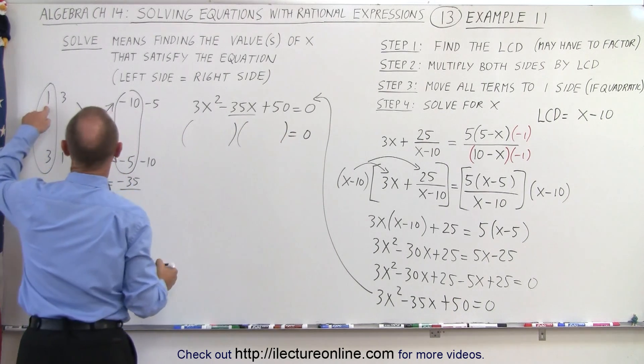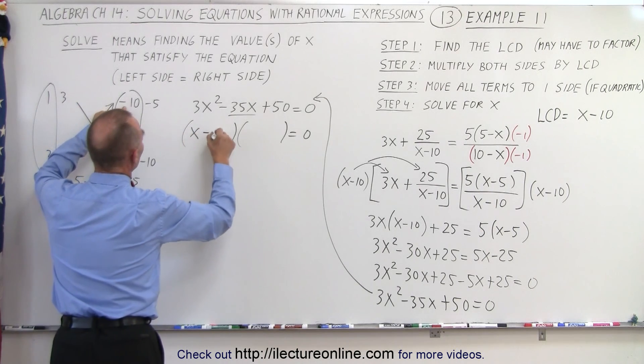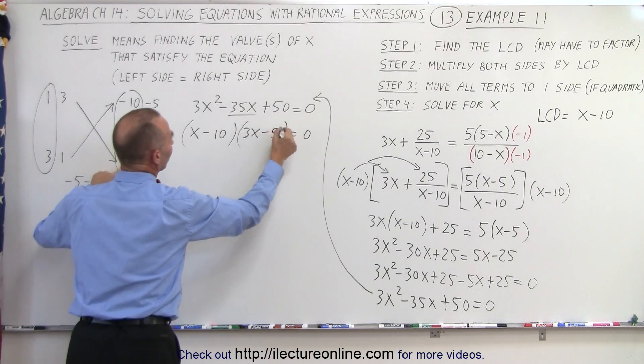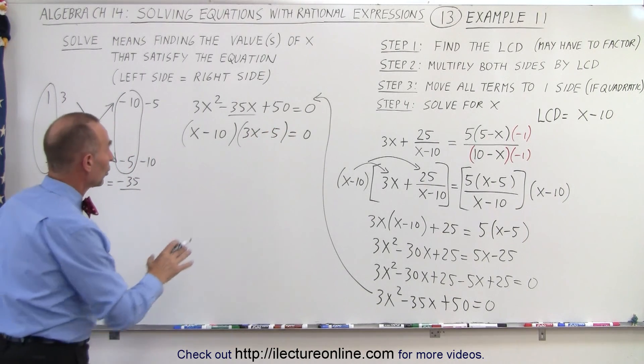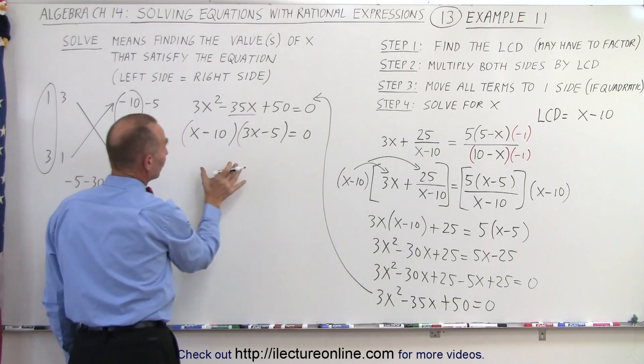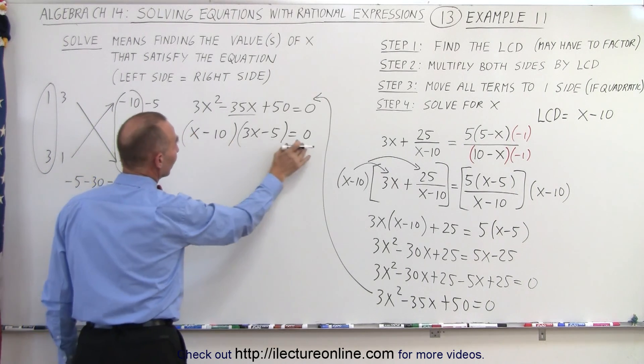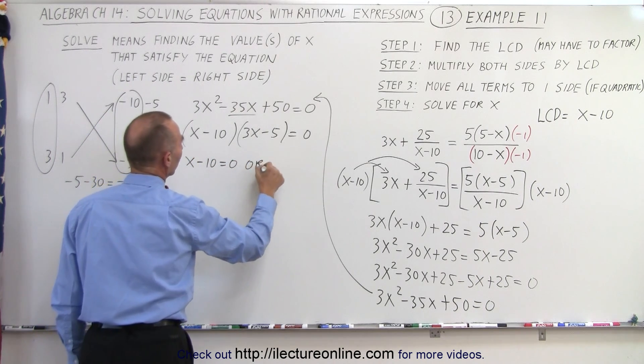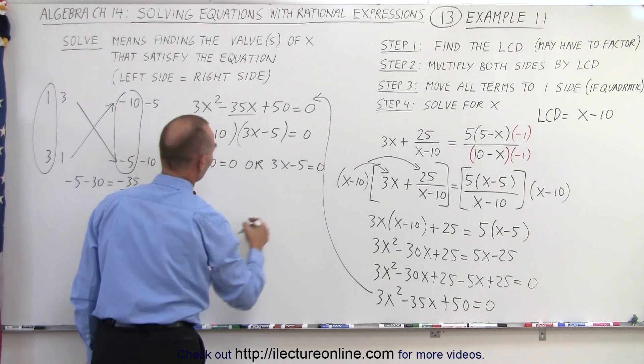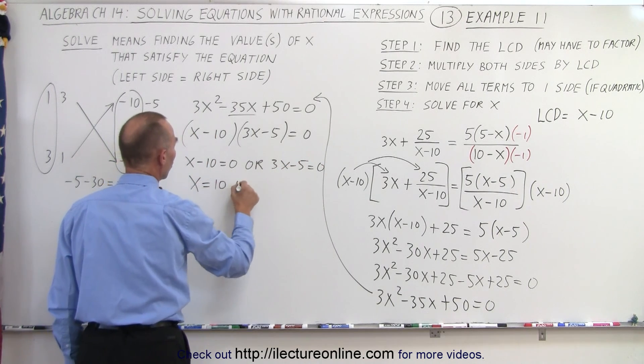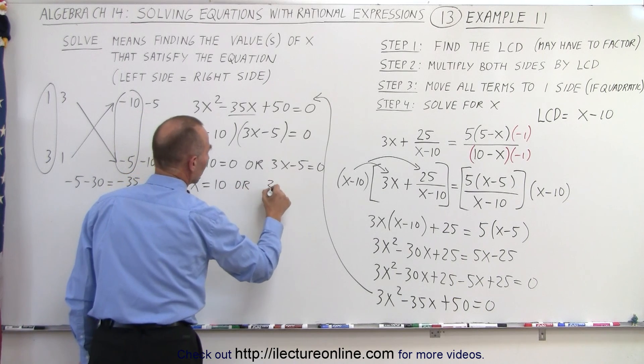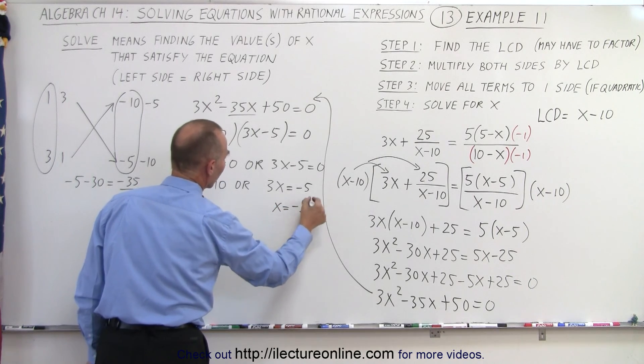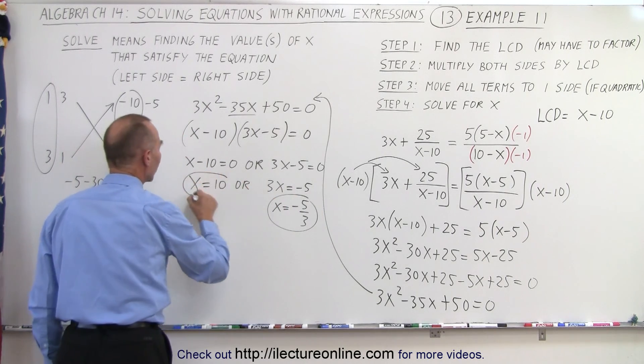I get 1 times x minus 10 and 3 times x minus 5. Now, let's solve that. The way to solve that is to see that we have two binomials multiplied together, giving us 0, which means that x minus 10 equals 0, or 3x minus 5 equals 0, which means that either x equals 10 or 3x equals 5,